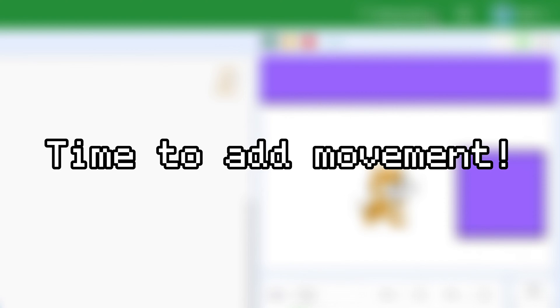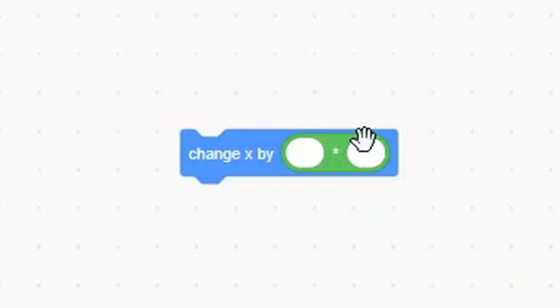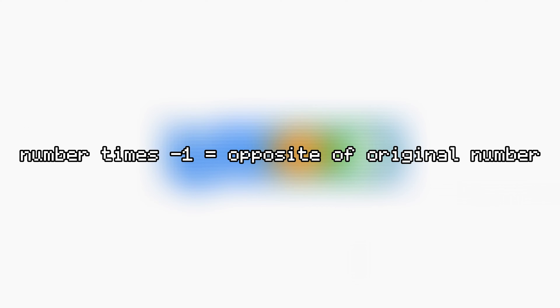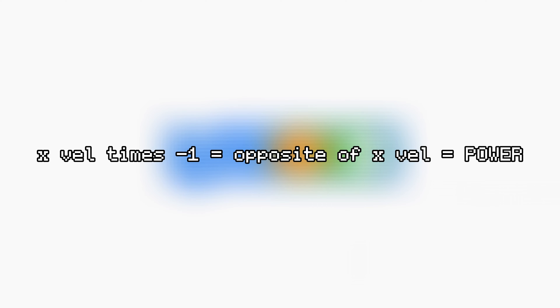That's why the second component, movement, is so important. To start, bring out a change x by block and put a multiplication block inside of the slot. For the first value in the multiplication block, put the variable x-vel, and for the second value, put negative 1. When you multiply any number by negative 1, it becomes the opposite of itself - so 10 becomes negative 10, negative 5 becomes 5, and so on. That means when we multiply x-vel by negative 1, we will end up with the opposite of x-vel, which is enough power to push us out of any wall.